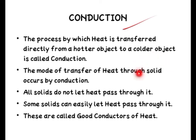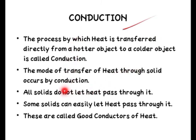Through solids, heat always transfers by conduction, but not all solids let heat pass through them. Only some solids can pass heat through them — these are known as good conductors of heat. The others which cannot let heat pass through them are known as bad conductors or poor conductors. Those through which heat can easily pass are good conductors, and those which do not let heat pass are bad conductors.